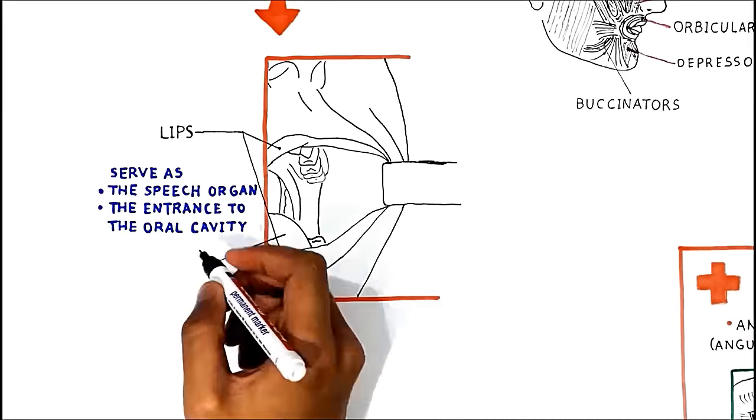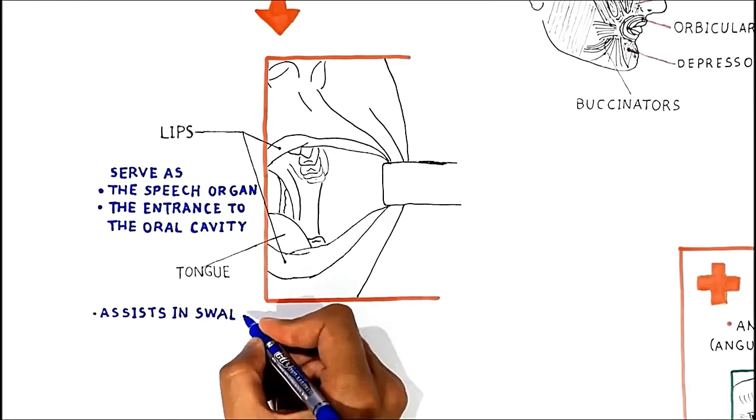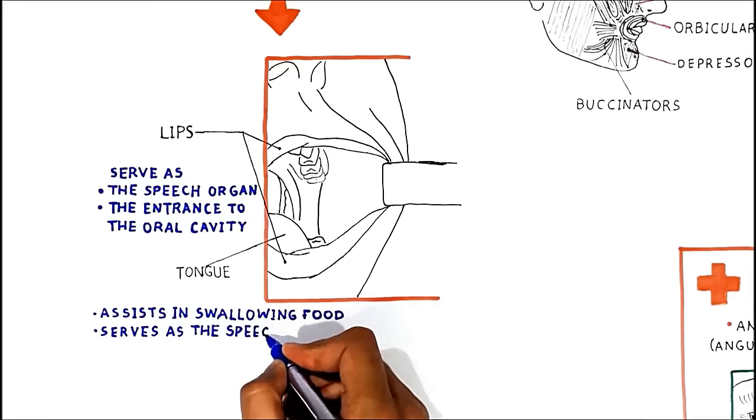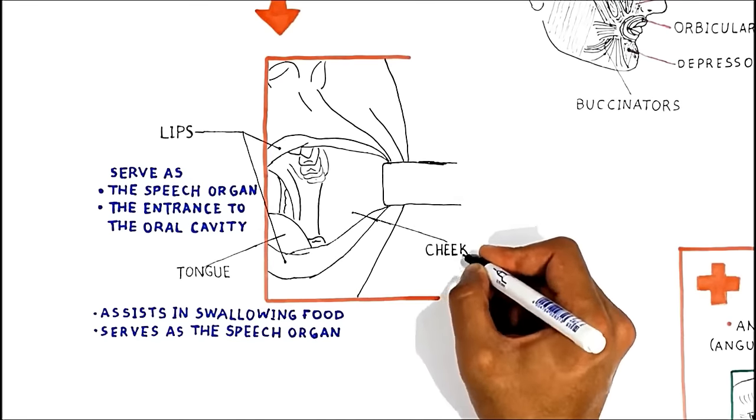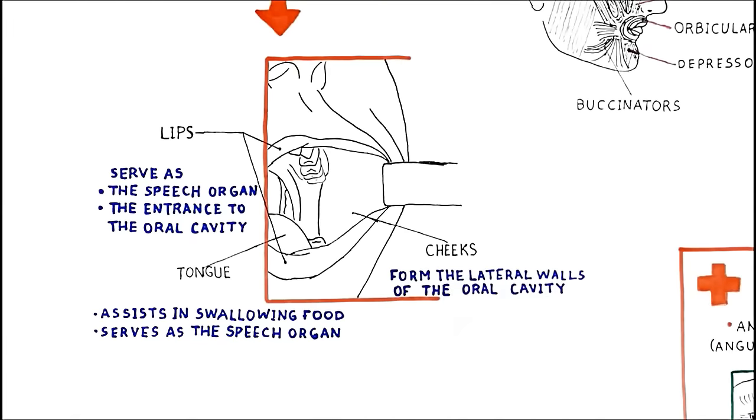Here we have the tongue, whose primary function is assisting in swallowing food and is also essential in producing speech. Aside the tongue are your cheeks, which form the lateral walls of the oral cavity. They consist of inner mucosa, outer layers of skin, subcutaneous fat, and facial muscles that assist in manipulating food in the oral cavity.